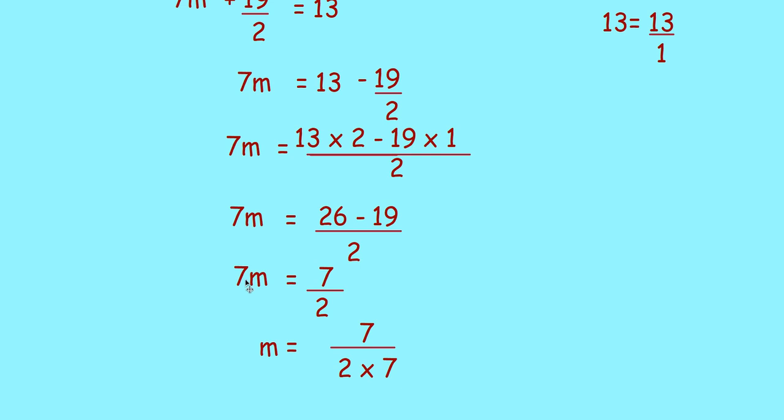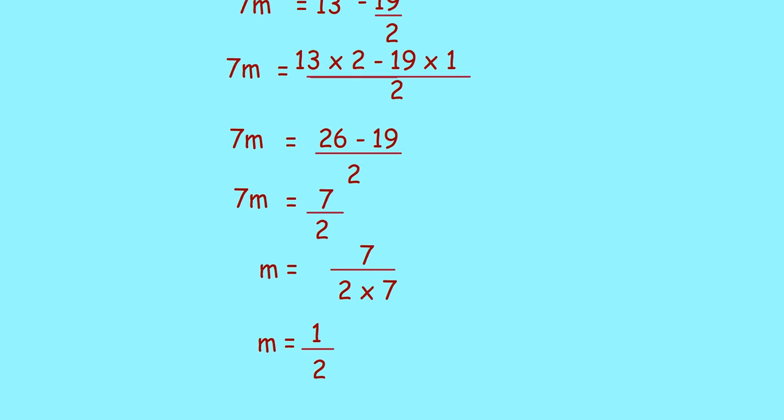So, here already 2 is there. You have to multiply 7 to it. So, 7 by 2 divided by 7. You can write it as 7 by 2 into 7. Now, 7 and 7 cancel. So, what will you get? The value of m is equal to 1 divided by 2 or 1 by 2.